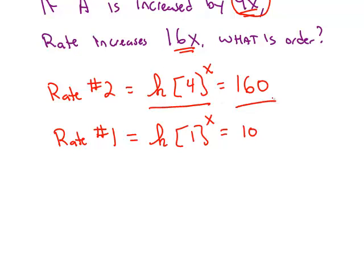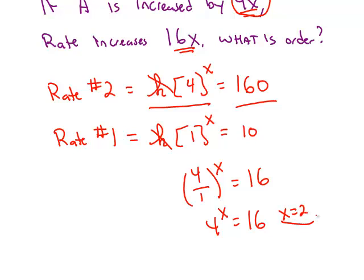Set up your ratios to cancel out the constant K. This time we get 4 to the x power is equal to 16. 4 raised to what power gives you back 16, and that power would be 2. So this experimental evidence is telling us that the order with respect to chemical A is second order.